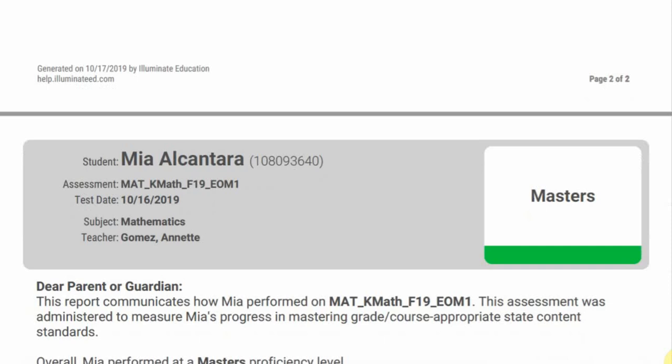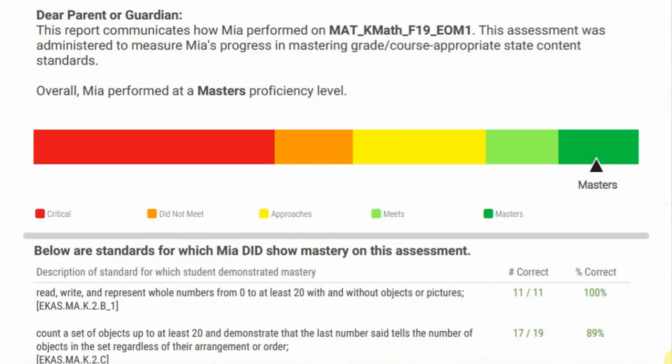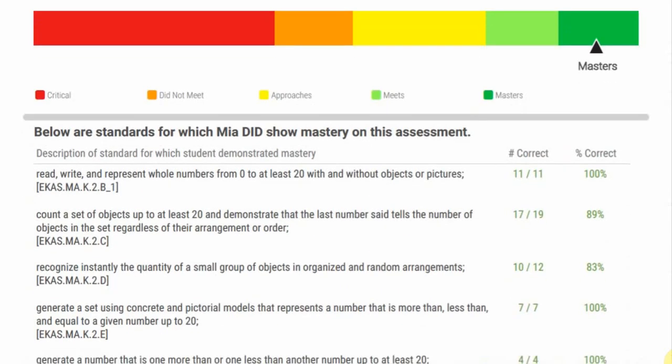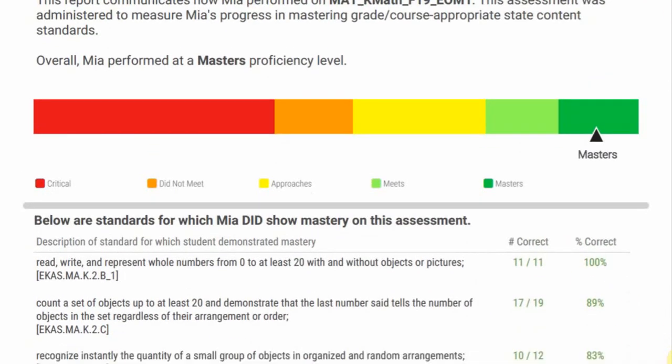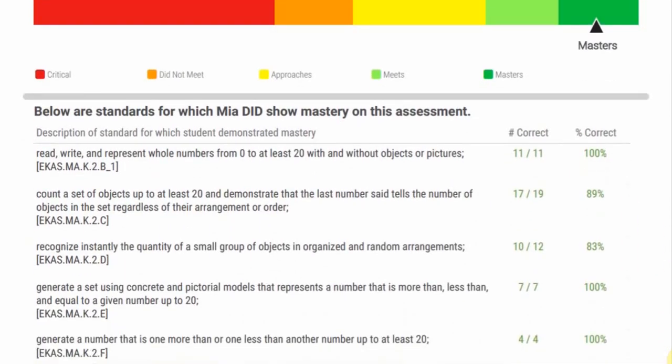Now just to give you an example of what it may look like if it is not a hundred percent. This student is also in a master's level, but this person did not meet every single question. They're still in a master's level, they still got an A.